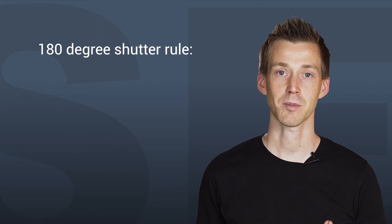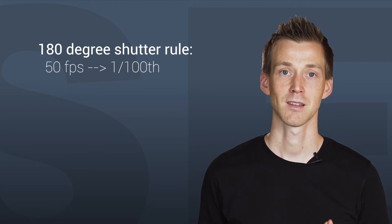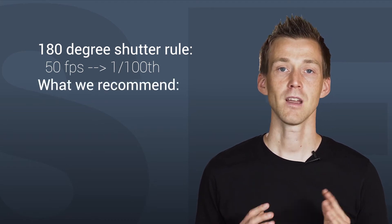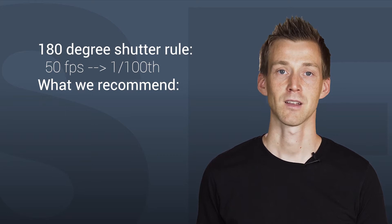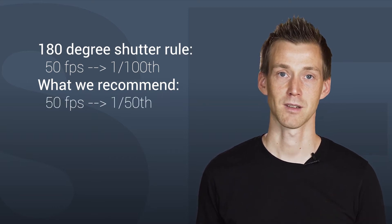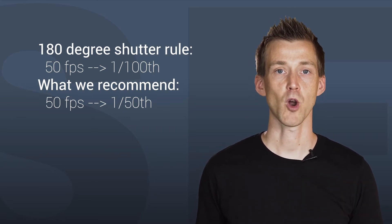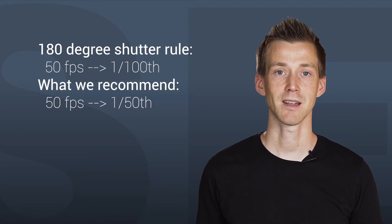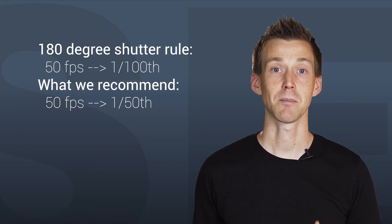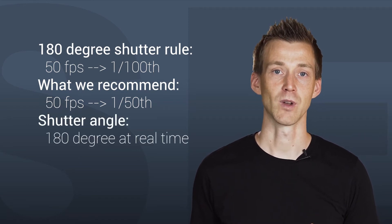Let's think about it like this. If we shoot at 50 frames per second and follow the rule, we have the shutter at 1/100 of a second. Here is what we recommend: if you shoot at 50 frames per second and you don't know for sure that you will slow the footage down to 50%, use 1/50 as your shutter speed. Theoretically, you have a shutter angle of 360 degrees. But if you are working on a 25p timeline and don't slow it down, you are skipping every second frame and you have your 180-degree shutter rule for real-time footage again.